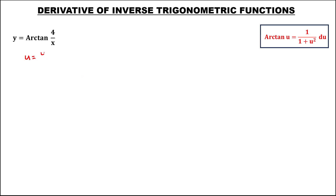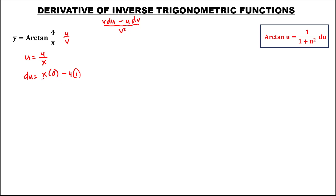So u is 4 over x, then du — using the quotient rule — this is v times the derivative of u, minus u times the derivative of v, over v squared. So v is x, times the derivative of u — the derivative of a constant is 0 — then minus u is 4, times the derivative of x, that's 1, then over v squared or x squared. So now du equals — this one is 0 — so this is negative 4 over x to the power 2.